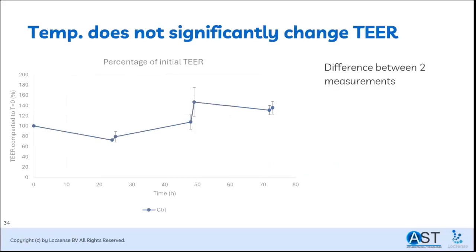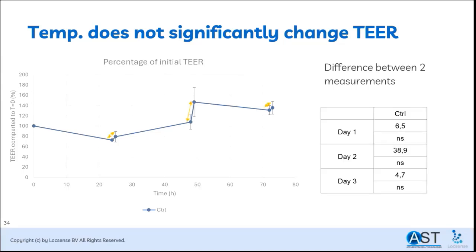Let's first have a closer look at the healthy control. You see measurements at different time points: zero, 24 and 25 hours, 48 and 49 hours, and 72 and 73 hours. Remarkably, there are some differences between the time points before and after EGTA addition, which is unexpected since EGTA is not added to the control. What did happen was that the well plate was taken out of the incubator and put back repeatedly — all this handling can change the temperature of the medium and the cells, and temperature has a great influence on the measured impedance. Even though these changes might seem impressive in the graphs, they are not significant. We can state that temperature does not significantly change the TEER results.